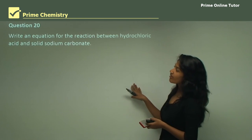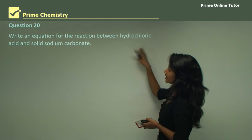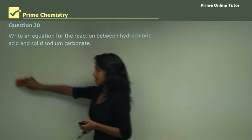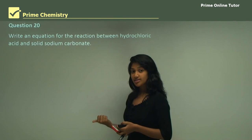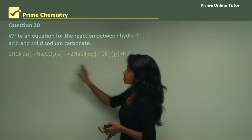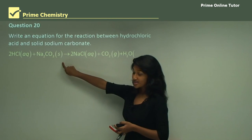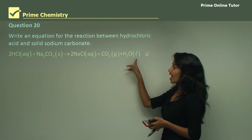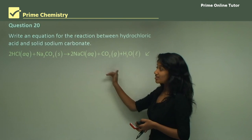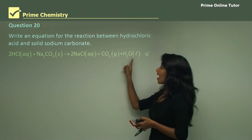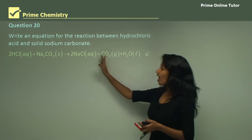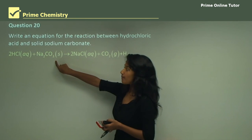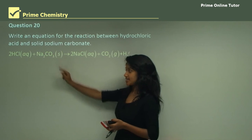Question 20: write an equation for the reaction between hydrochloric acid and solid sodium carbonate. This is a carbonate-acid reaction, so the products are carbon dioxide, water, and a salt. The equation is: 2HCl (aq) + Na₂CO₃ (s) → 2NaCl (aq) + CO₂ (g) + H₂O (l). Always balance your equation and write state symbols — HCl and NaCl are aqueous, sodium carbonate is solid (as given), carbon dioxide is a gas, and water is a liquid.